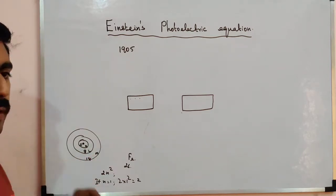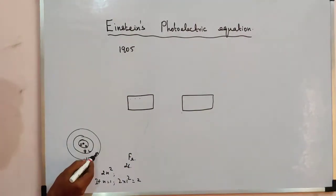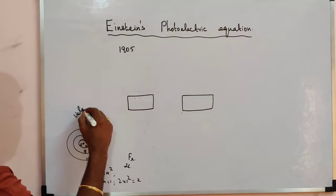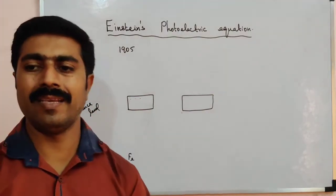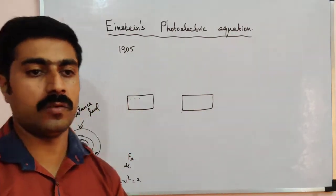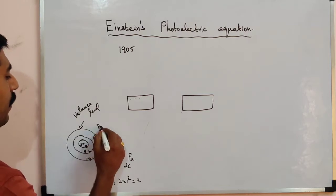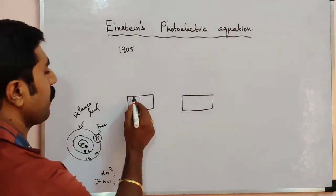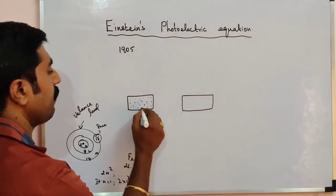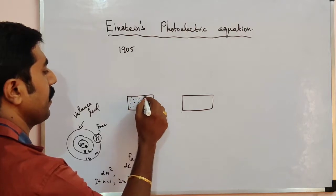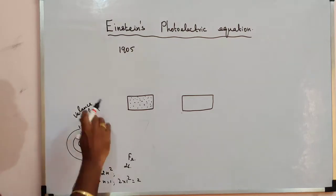So the level is partially filled — it's not fully filled. This is called the valence level. The electrons filled in this level are called valence electrons. There are free electrons which move randomly inside the metal.